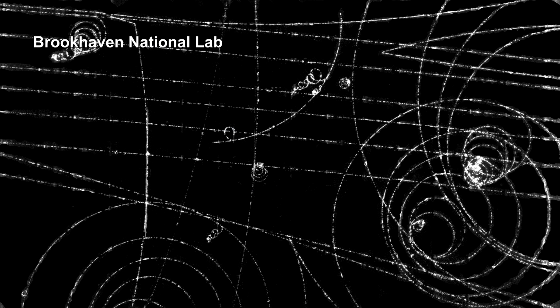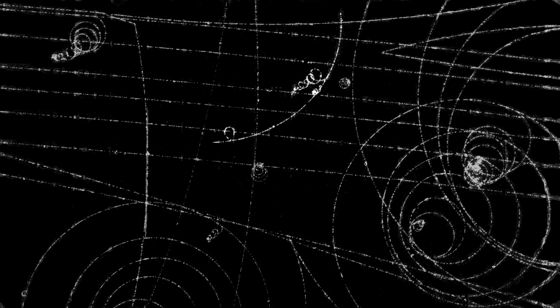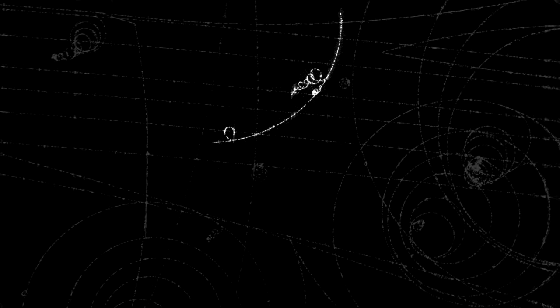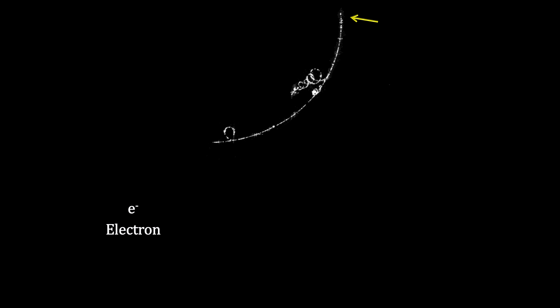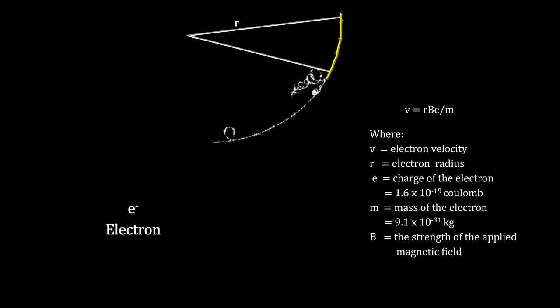Here is a photograph of a particle track in a hydrogen bubble chamber from the Brookhaven National Lab. Given the direction of the applied magnetic field, electrons will curve clockwise. This is a medium-speed electron arching through the cloud chamber. Since we know the strength of the magnetic field applied across the bubble chamber, we can calculate the particle's momentum by measuring the radius of its curvature. The straighter the path, the faster the particle is moving.